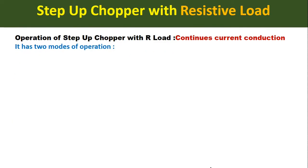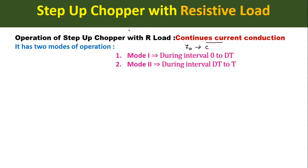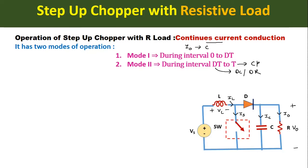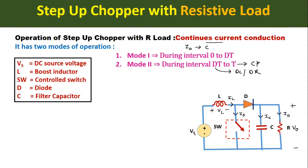Next is the operation of the step-up chopper with resistive load, considering continuous current conduction. The operation is divided into two modes: Mode 1, which occurs during the interval 0 to dT, and Mode 2, which occurs during the interval dT to capital T, where T is the chopping period and d is the duty cycle or duty ratio.